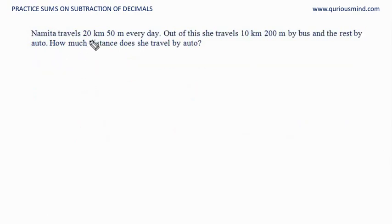Let's do the next one. Namita travels 20 kilometer 50 meter every day. Out of this she travels 10 kilometer 200 meter by bus and the rest by auto. How much distance does she travel by auto? If we subtract the distance she travels by bus from the total distance, we will get the distance traveled by auto. But for doing that subtraction, we need to have these distances in one unit, and for that we will convert them into kilometers.